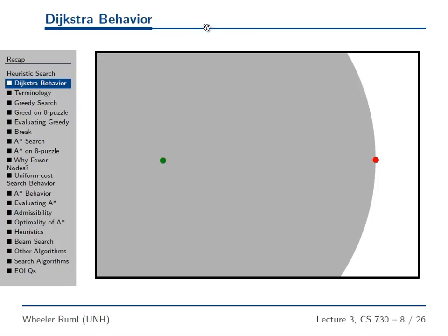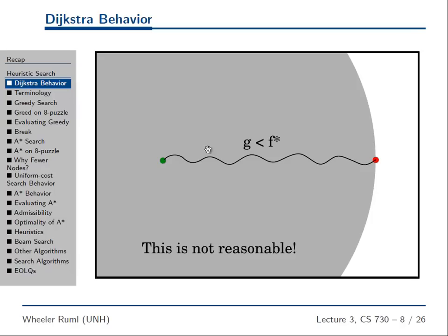By the time we actually get around to expanding the goal, we've visited everything within the optimal solution cost of the goal — every node whose g value is less than f*, the optimal solution cost. That doesn't seem very reasonable because, for very intuitive reasons, the nodes over in this part of the space are the wrong way — they're further away from the goal.